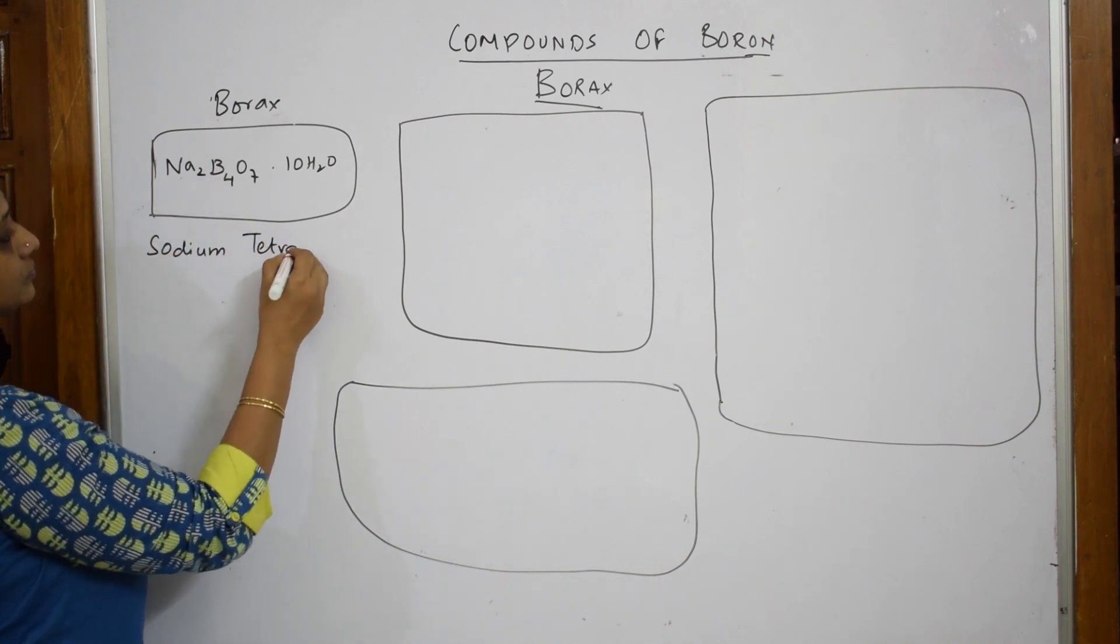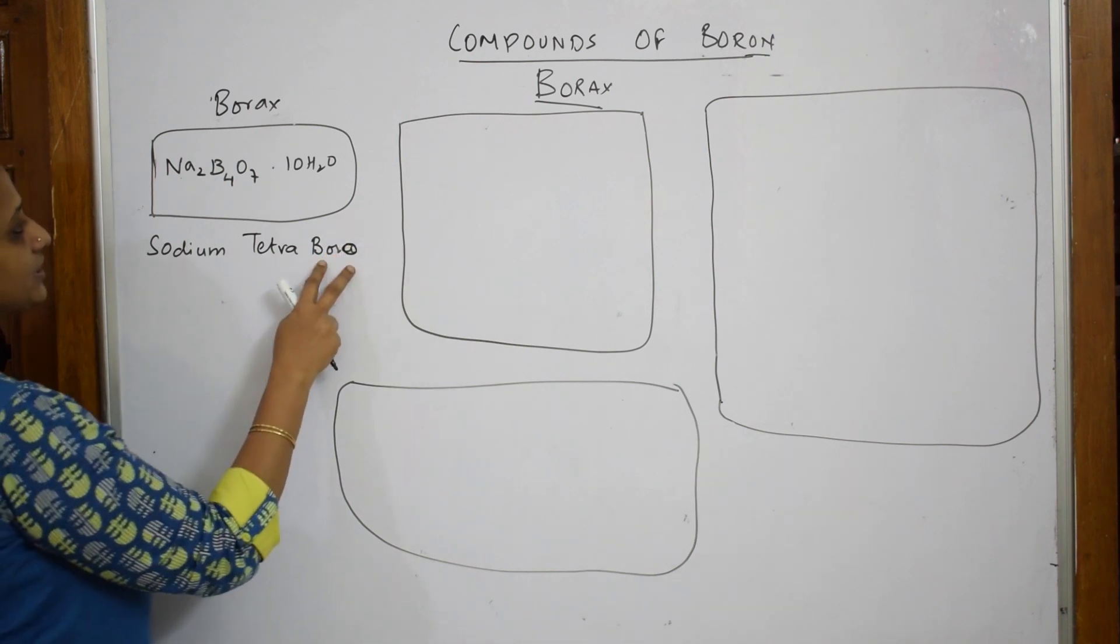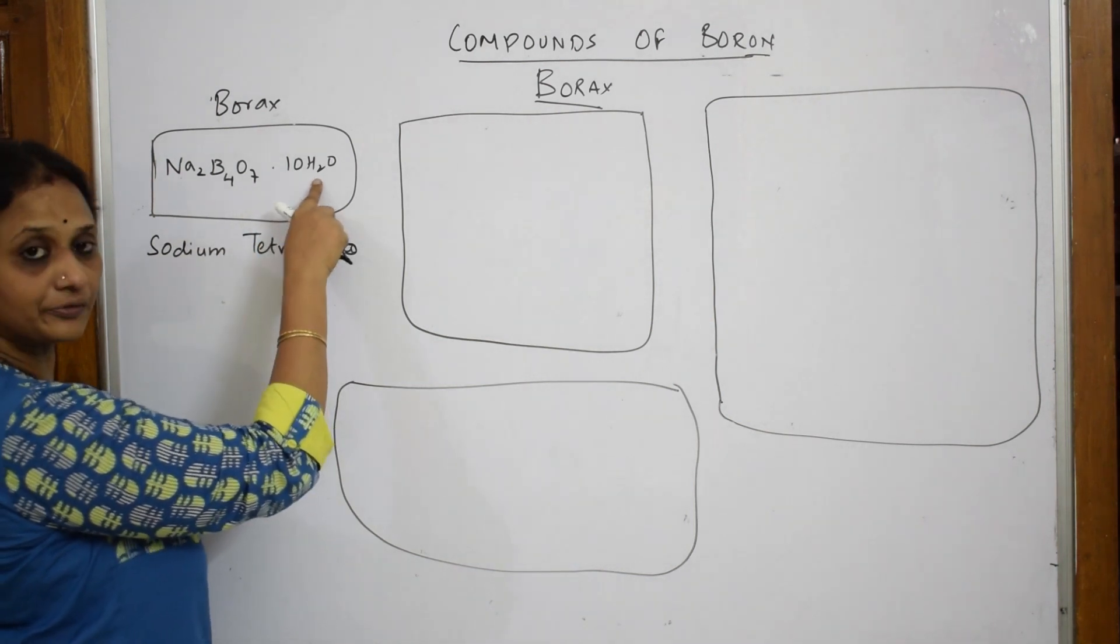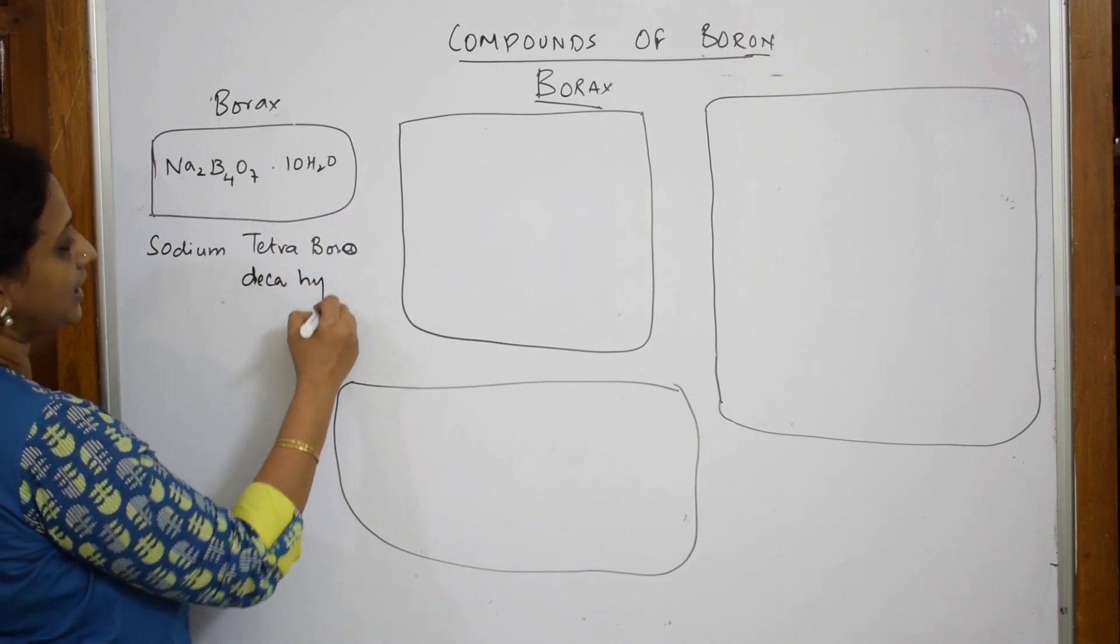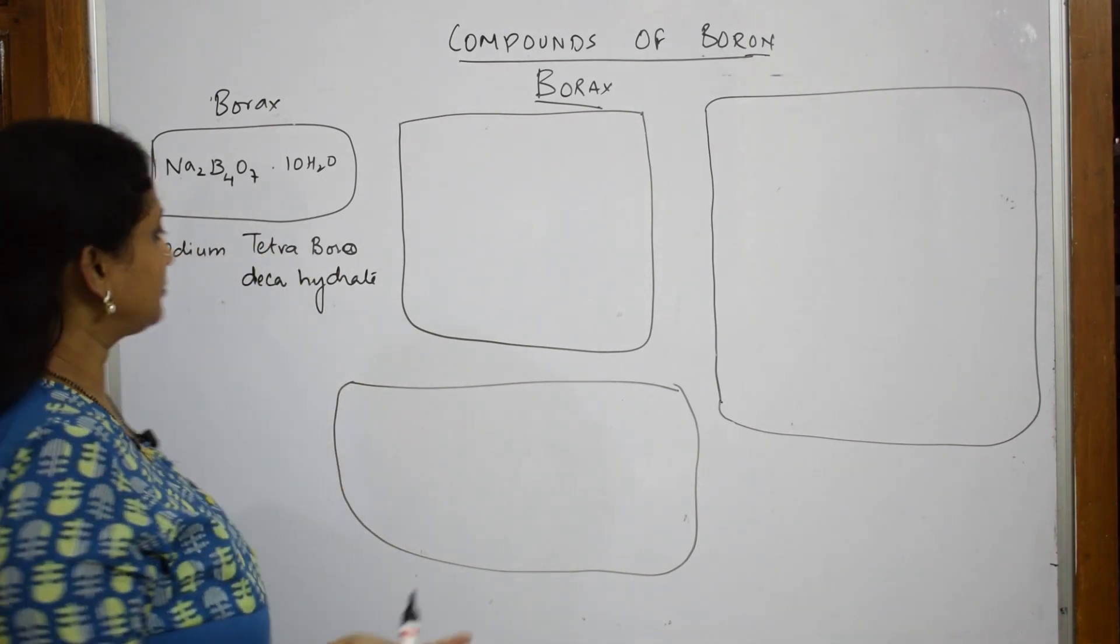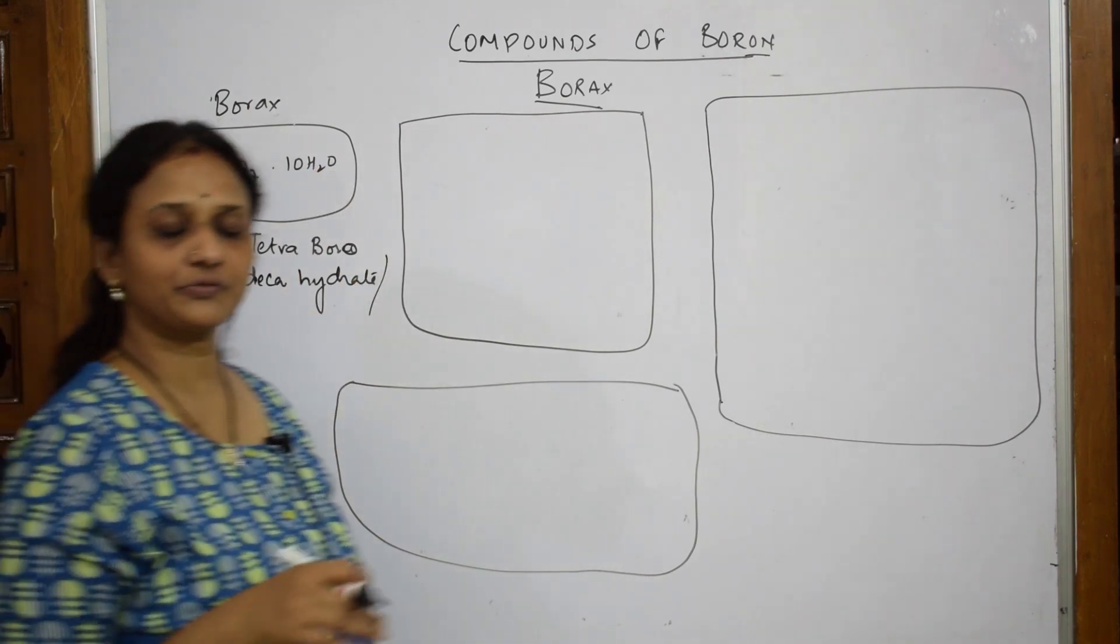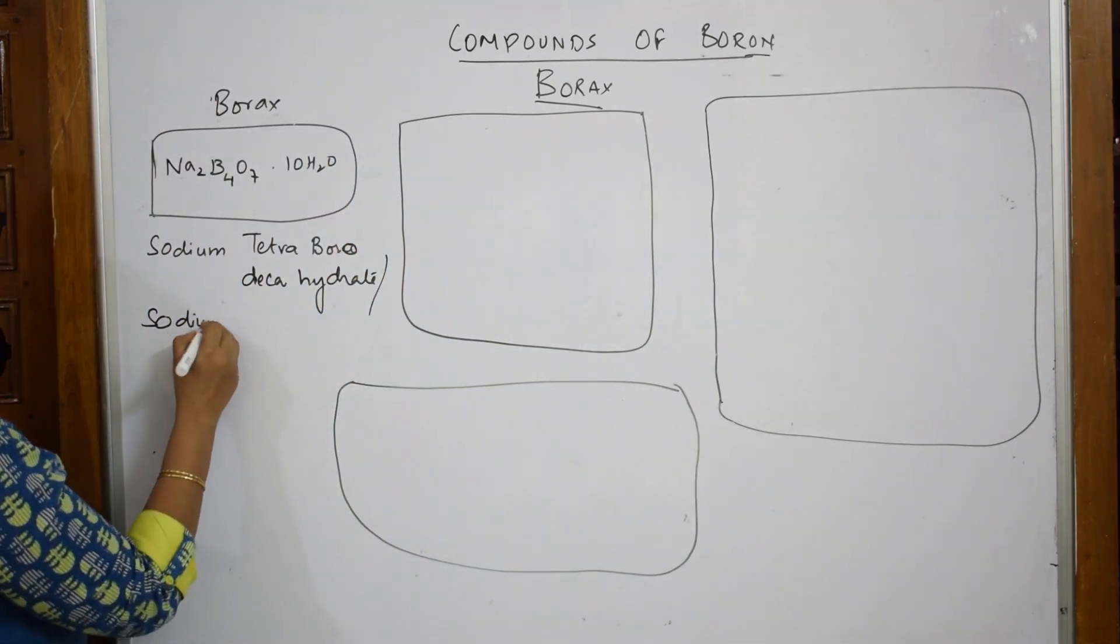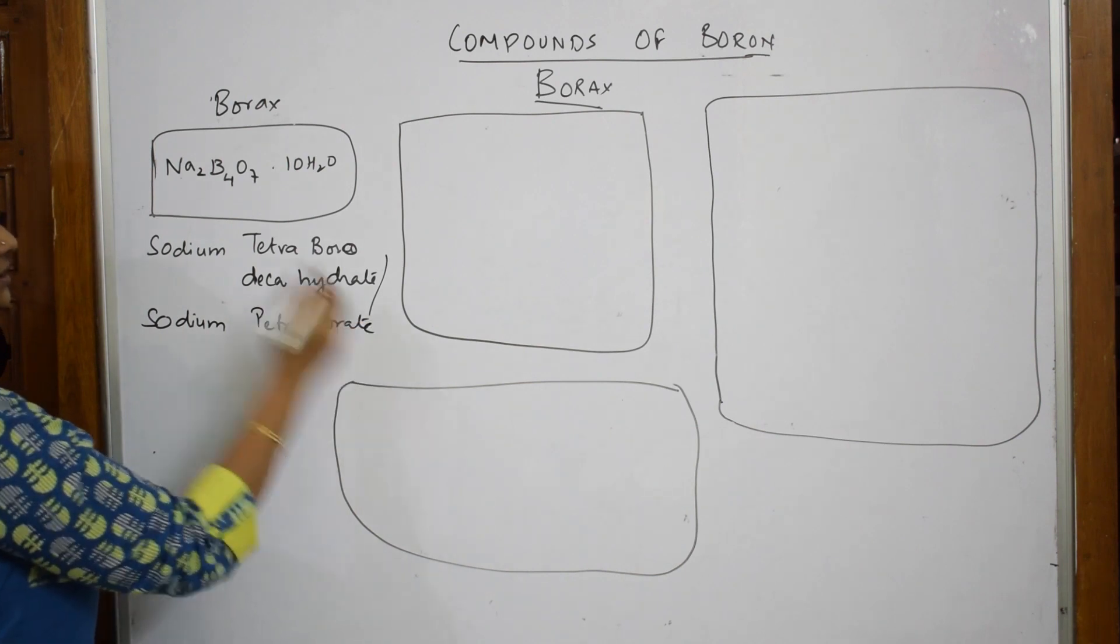So tetraborate. Okay, what did I do? I just left it here. And now I am going to add this here. How many water molecules? This is called water of crystallization. So how many water molecules? Decahydrate. Some name it as sodium tetraborate, also fine. So I will write that also. We name it as, because water molecule is a part of water of crystallization. It is a part of the whole crystal. So you can also write it as sodium tetraborate.